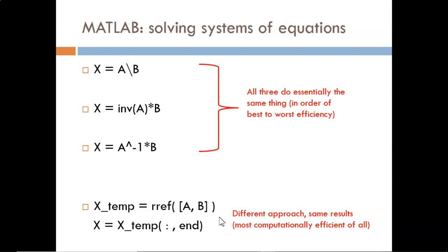For the reduced row echelon method, two commands must be used. The first one is to apply the rref command to an augmented matrix, the concatenation of A and B. Then, to be left with only the solutions, we extract the last column.